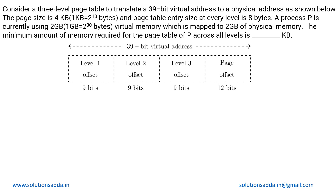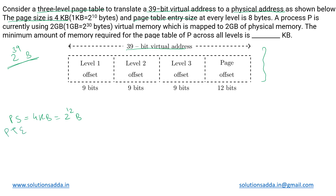This is an operating systems question based on multi-level paging. We have been given a three-level page table which is used to translate a 39-bit virtual address to a physical address, as shown here. So we have a 39-bit virtual address, which implies the maximum process size is 2 to the power 39 bytes. The page size is 4KB, which means 2 to the power 12 bytes. The page table entry size (PTE) is 8 bytes.